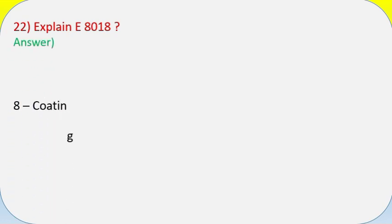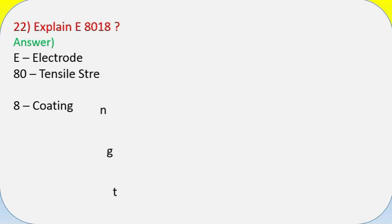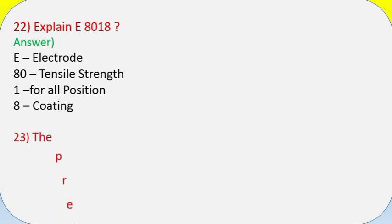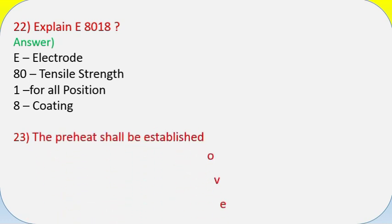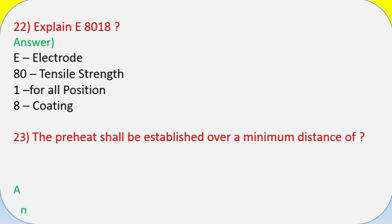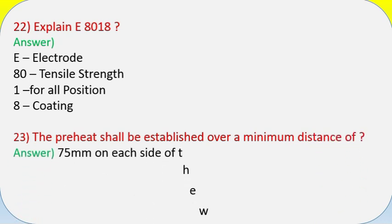Question 22: Explain E8018. Answer: E — Electrode, 80 — tensile strength, 1 — for all positions, 8 — coating type. Question 23: The preheat shall be established over a minimum distance of 25–75 mm on each side of the weld.